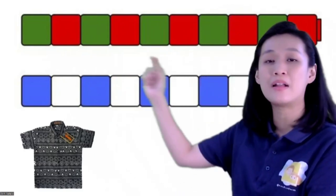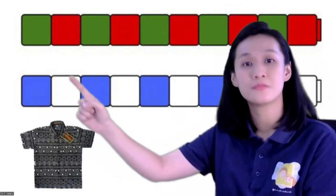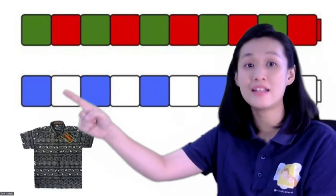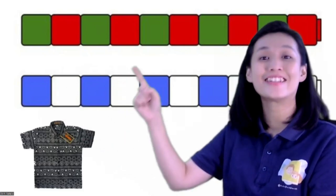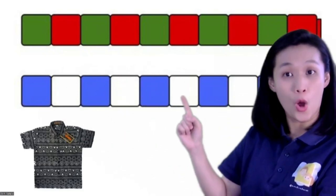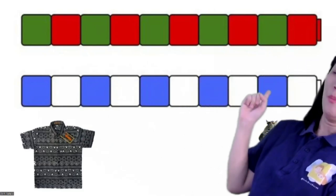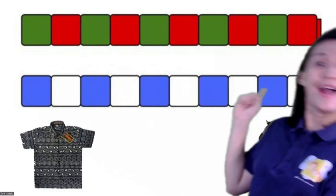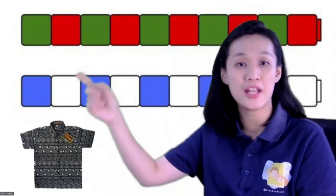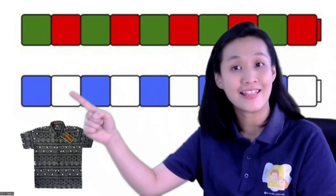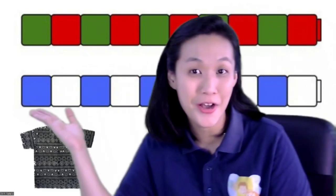Let's check the second building block. The color is blue, then white, and back to blue again. White, blue, blue, white, blue, white. Yes! This is the pattern. The pattern is blue and white, and they go over and over again. Pattern.